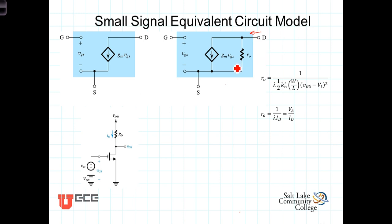This then becomes the small signal equivalent model. To use this model when performing small signal or AC analysis, we use superposition. Here's our circuit with the FET — the field effect transistor — the drain resistance: a basic amplifier involving the field effect transistor. Our circuit includes the biasing DC voltages VGS and VDD, and then superimposed on that is the small signal voltage, lowercase VGS.